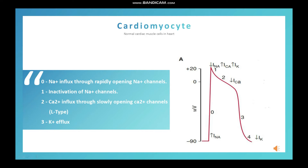Phase three is slow repolarization, and phase four is when the membrane returns to resting membrane potential. In phase zero, when electric current comes through the conduction system from SA node to AV node, His bundle, Purkinje fibers, and finally to cardiomyocytes, voltage gated sodium channels open. A rapid influx of sodium occurs, and the membrane potential rises from negative 90 millivolts to about positive 20 millivolts.